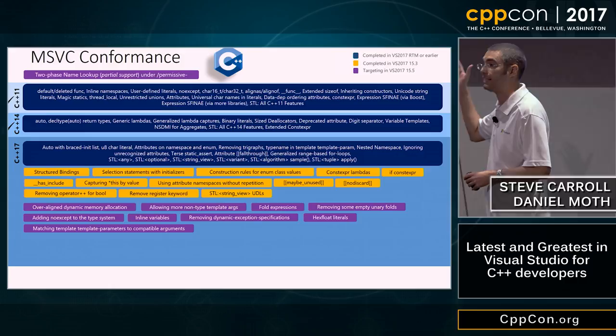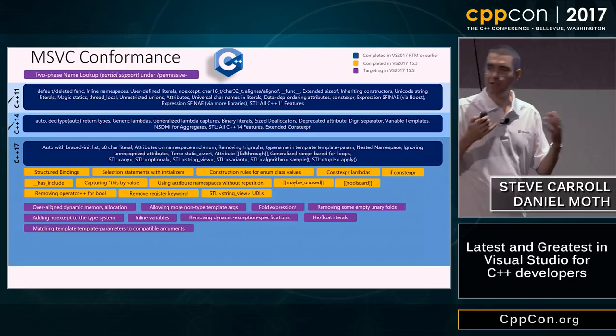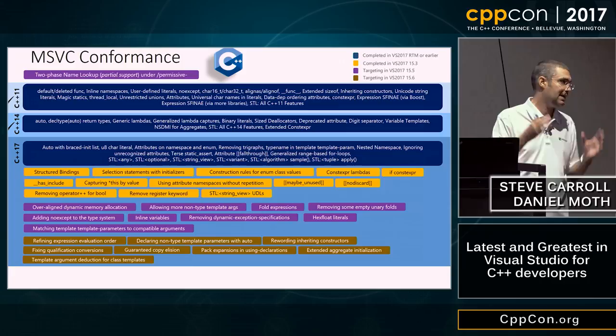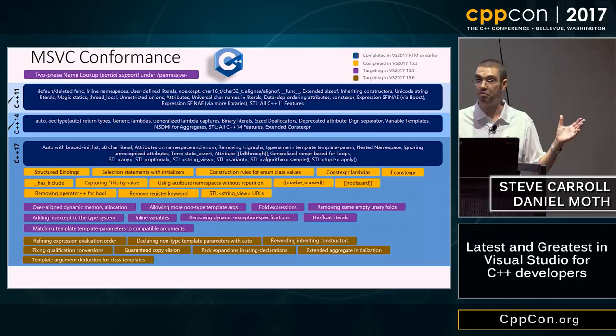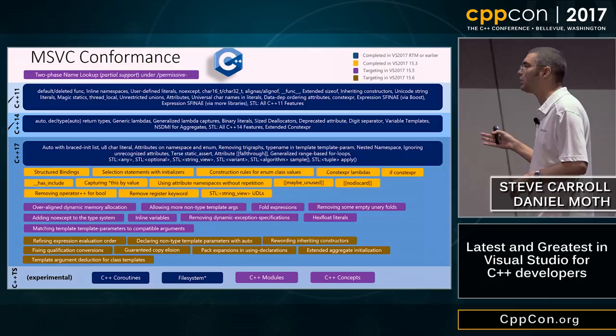15.5 won't be the last update — there will be a 15.6. At that point, once we've finished all the brown boxes across the compiler and IDE IntelliSense, we will be conformant with the C++17 standard and completely caught up. Beyond the base standard, there are also technical specifications shown in color-coded boxes, tracked behind an experimental flag so you don't inadvertently take a dependency on specs that are still moving.